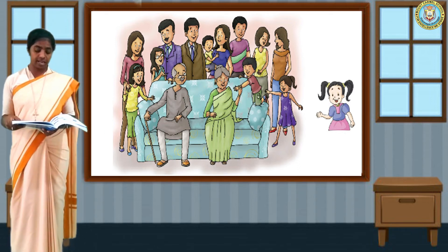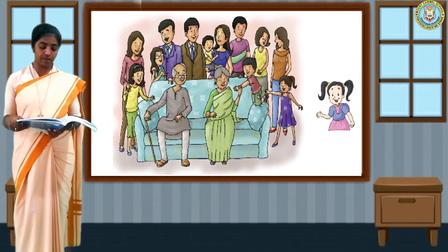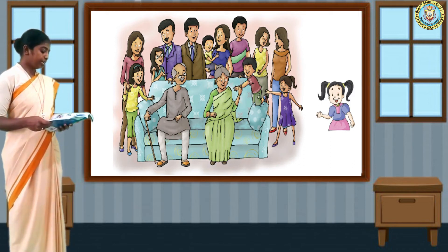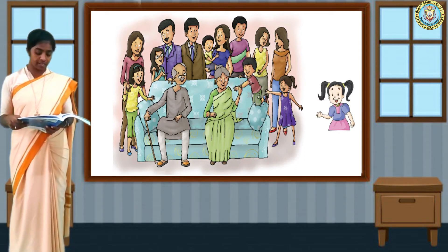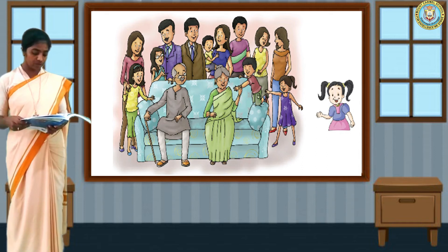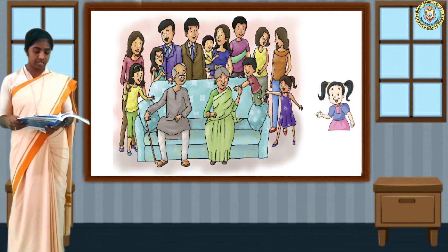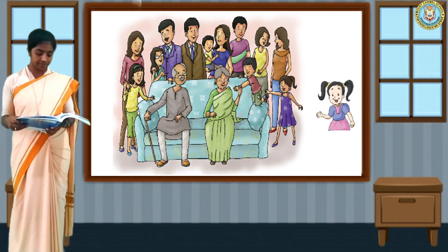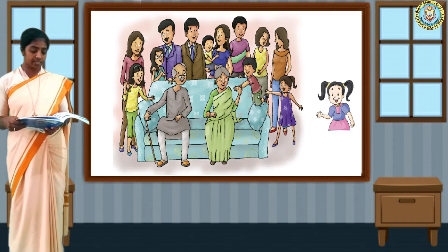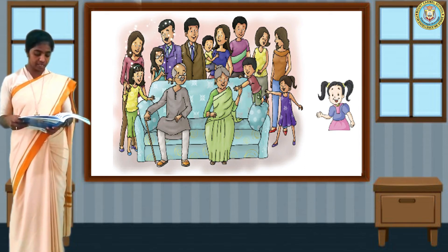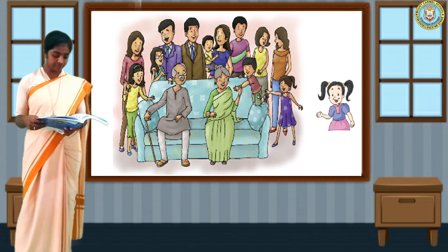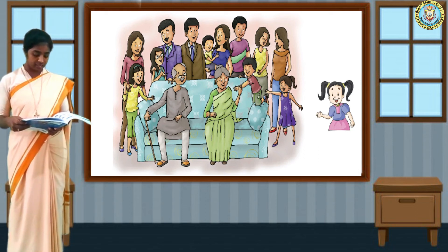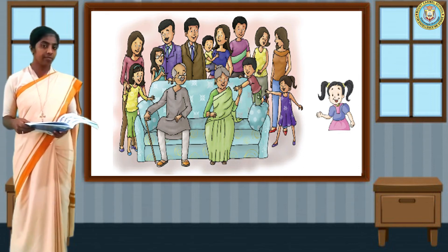My grandfather and grandmother are sitting on the sofa. My father and mother are standing behind them. My mother is carrying my brother — that sibling is a new word for us. My father has two brothers. His elder brother is standing on the left with his wife. He is my uncle, and his wife is my aunt. They have two daughters who are my cousins.